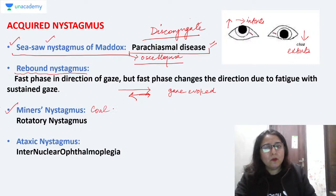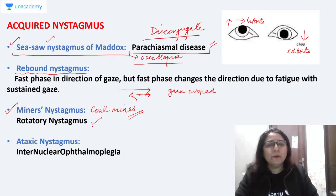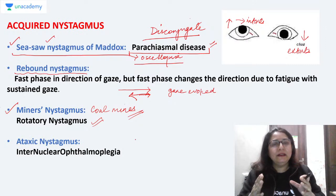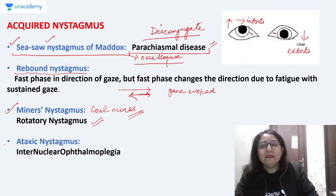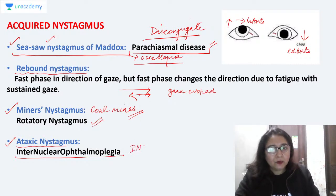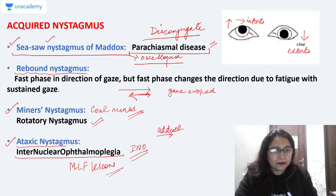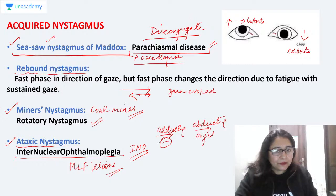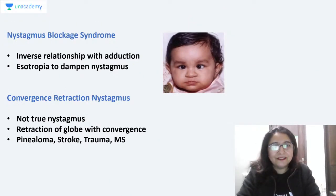Miners' nystagmus is a rotatory nystagmus seen in coal miners working in poor illumination for long hours, causing fixation problems. Ataxic nystagmus is seen in internuclear ophthalmoplegia (INO) — a lesion of the medial longitudinal fasciculus (MLF). In INO, the adducting eye cannot adduct, while the abducting eye goes into nystagmus — this is ataxic nystagmus.